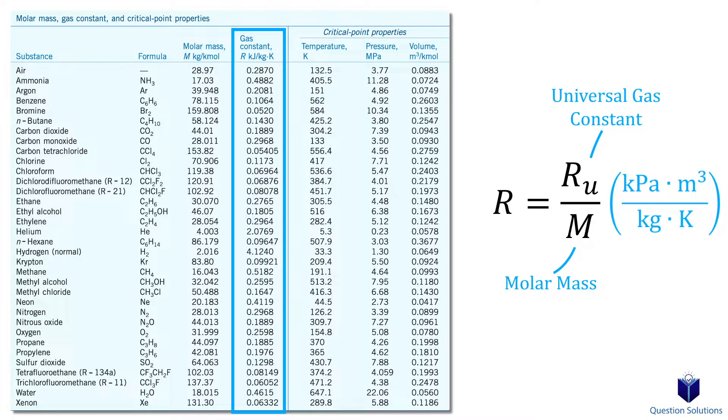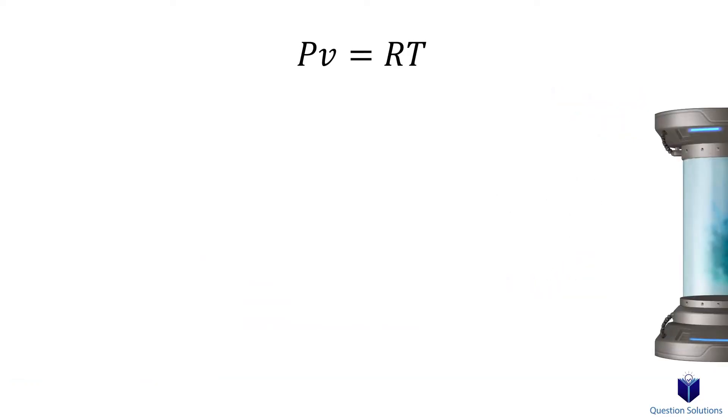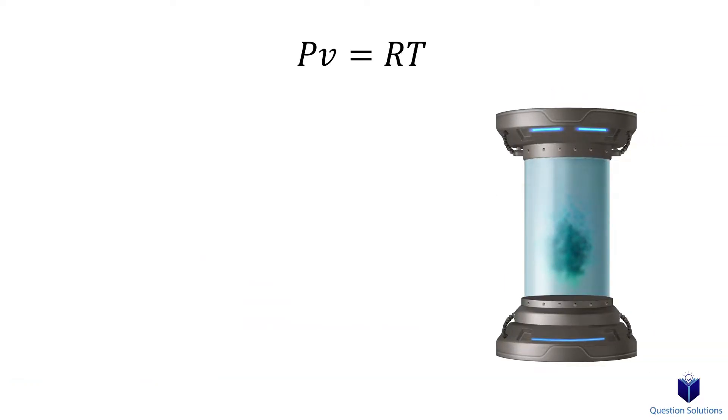If a gas obeys the ideal gas equation, then we call it an ideal gas. We can use it for problems that involve gas states, and the equation closely approximates the pressure, volume, and temperature of real gases at low densities.